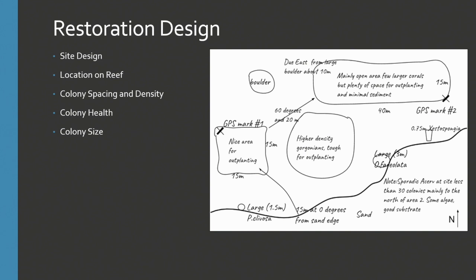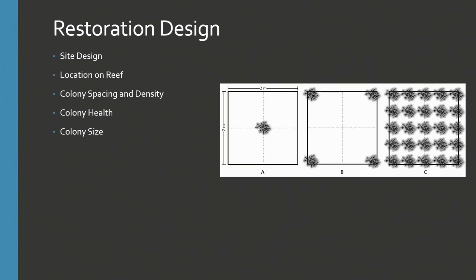The third step is restoration design. Within site selection, we indicate you should go out and annotate your site — drawing where things should go, taking GPS points, drawing geographic features to help navigate across the site, and measuring areas so you can return and begin restoration. We indicate where on the reef things should go; for example, if current typically runs one direction, you may want to plant so the current carries fragments across the site rather than into sandy areas. We also talk about spacing and density — several talks today addressed this — and the literature that supports those decisions.